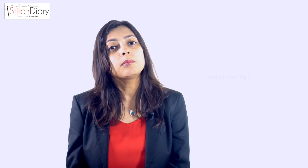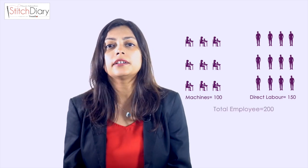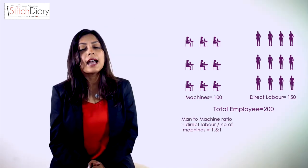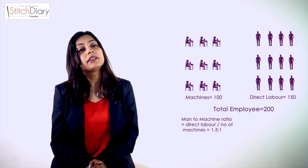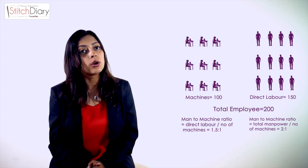These benchmarks should be established by each factory and then one should aspire to reduce it further. This can be measured by two parameters: Direct Labour or Total Employee Workforce. Let's take a simple example. A factory has 100 operational machines, 150 direct labour employees, and a total of 200 employees in the entire factory. The Man to Machine Ratio as per the Direct Labour is 150 by 100, or 1.5 to 1.